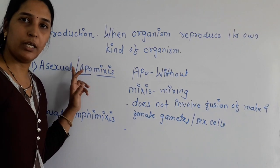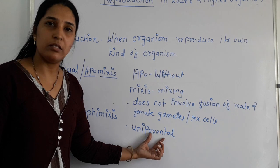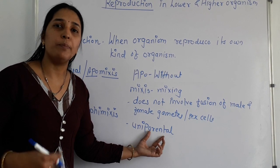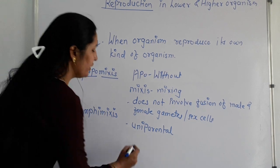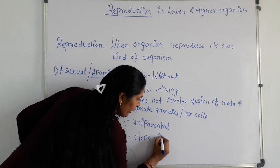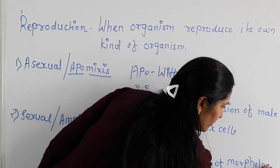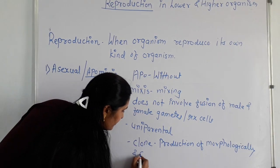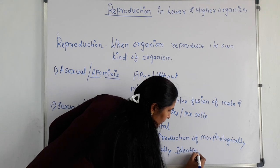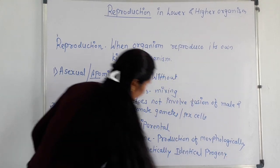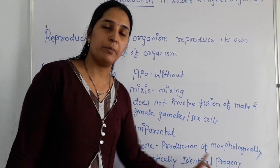The main feature of asexual reproduction is that it is uniparental — only one parent is involved. The progeny produced through this reproduction is morphologically and genetically identical. Identical means similar, or we can simply say it is a clone. The production of morphologically and genetically identical progeny or offspring is called a clone.